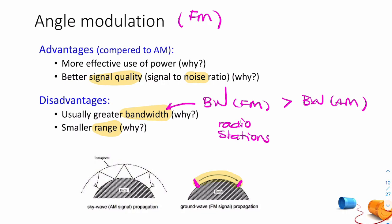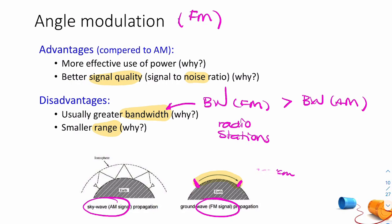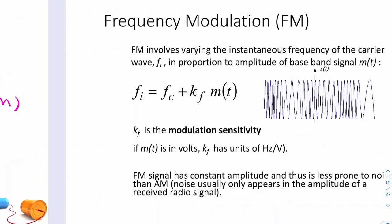With FM you're often limited to your local neighborhood, up to 50 to 100 kilometers. So there are two main advantages and two main disadvantages of FM, and you'll be able to express these further by the end of Lecture 8.